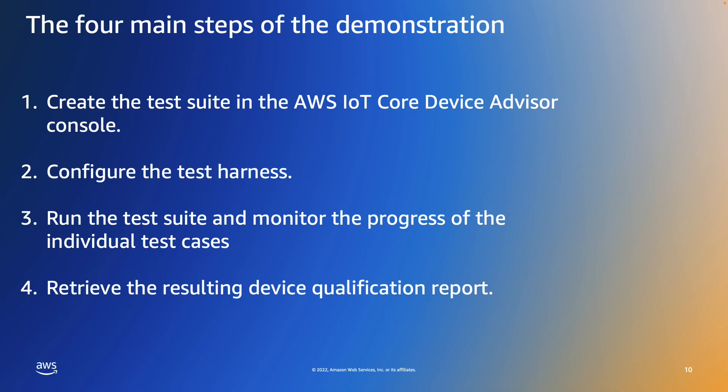So that concludes the demonstration. We've seen how we can use the AWS IoT Core Python SDK to create a test harness and automate the execution of a Device Advisor test suite, and the production of a device test report that can be submitted to the AWS Partner Network to have the device qualified for the AWS Partner Device Catalog. Thank you for watching.